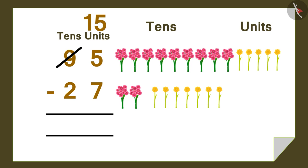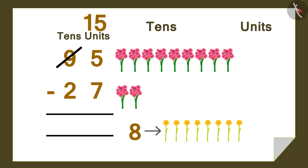Now, the number 5 becomes 15. Now, subtract 7 from 15. It is 8. Let's write this 8 below the units. 15 minus 7 is 8.